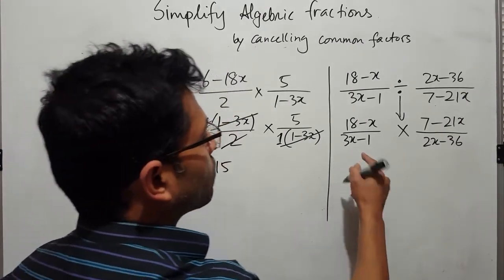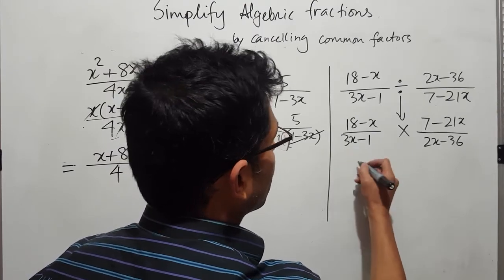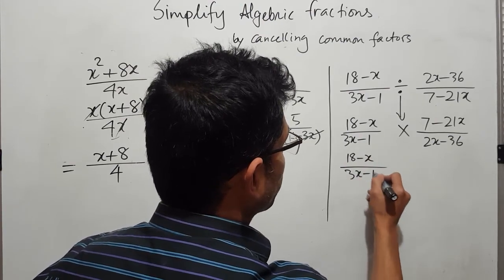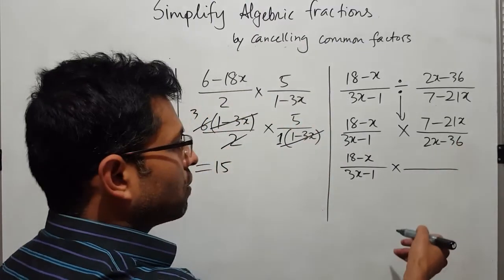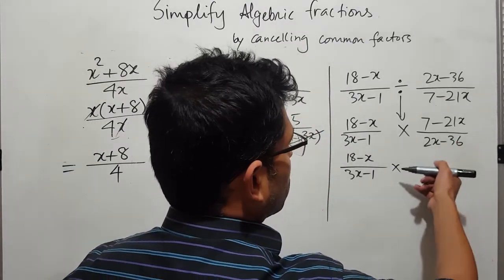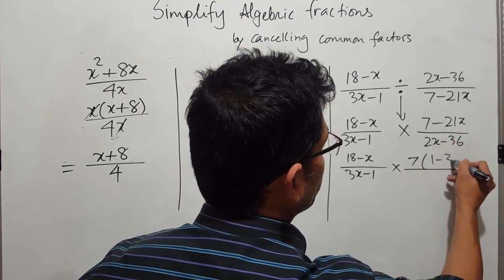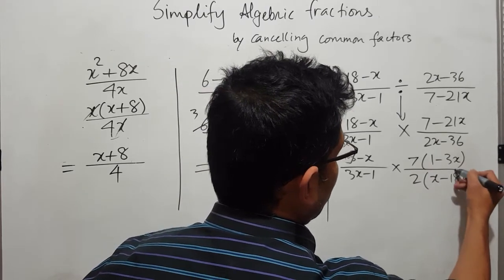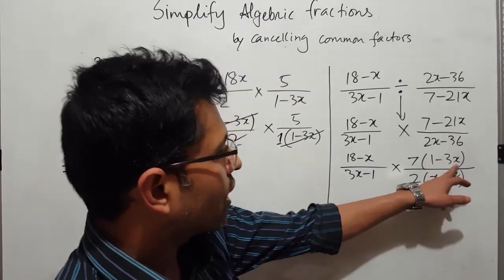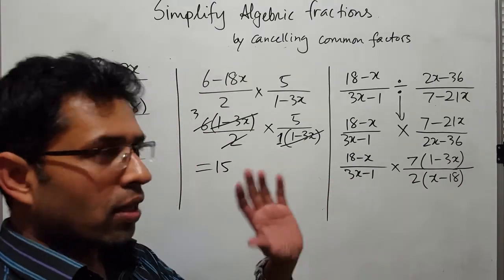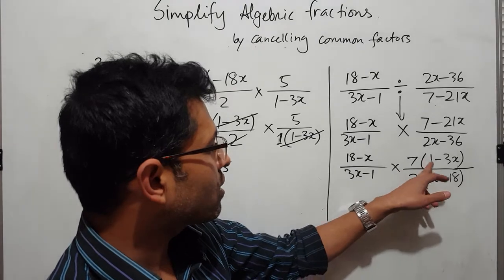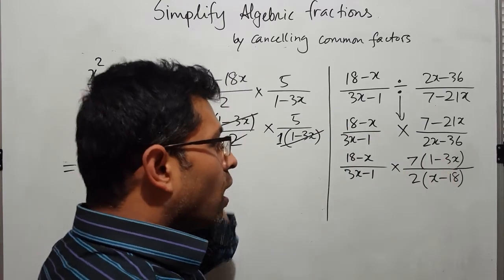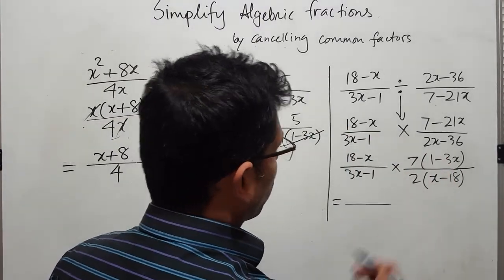Now we look for common factors. If you take 7 as a common factor from (7 minus 21x), you get 7 times (1 minus 3x). If you take 2 as a common factor from (2x minus 36), you get 2 times (x minus 18). Looking carefully, we can see (1 minus 3x) and (3x minus 1) — these are very close, only the sign is different.